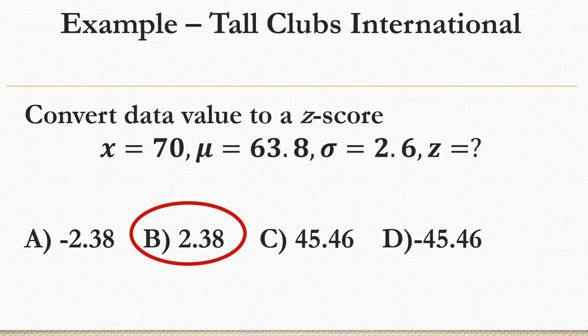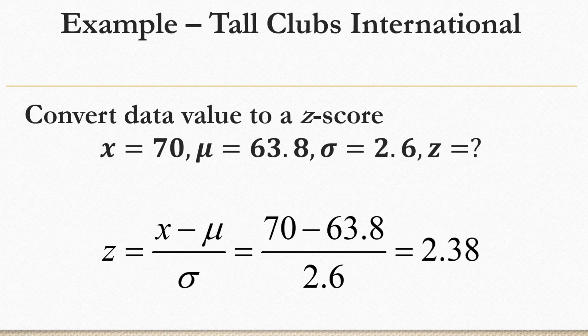And if you got 2.38, you're correct. You take 70 minus 63.8, divide by 2.6, and you get 2.38. Remember, the subtraction has to happen before the division.